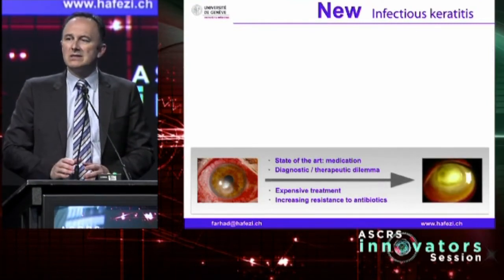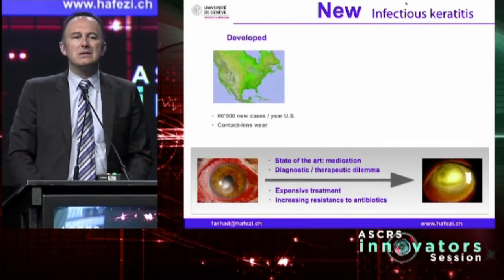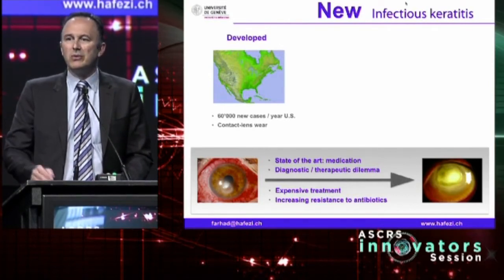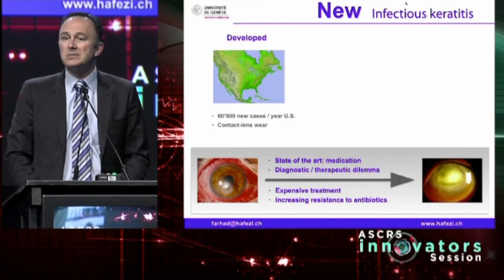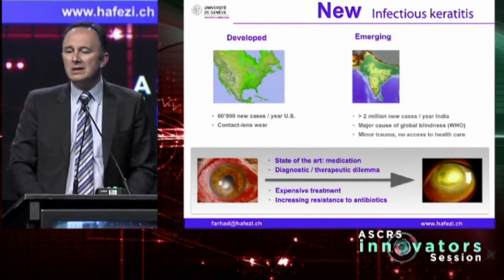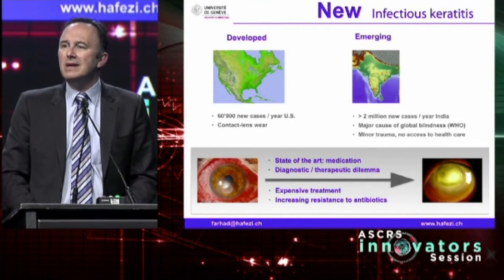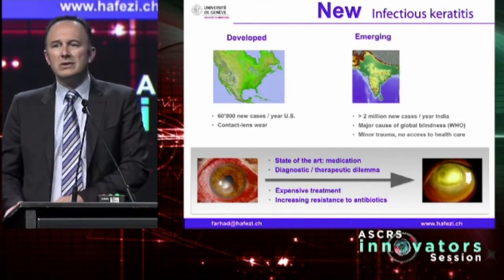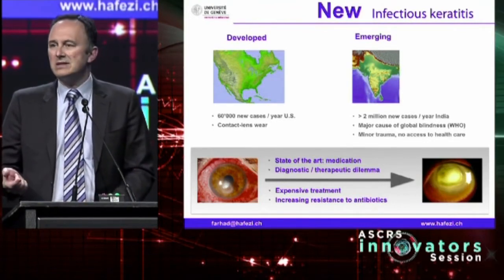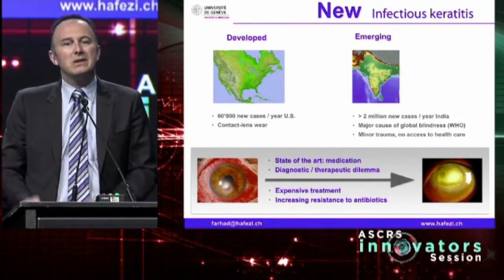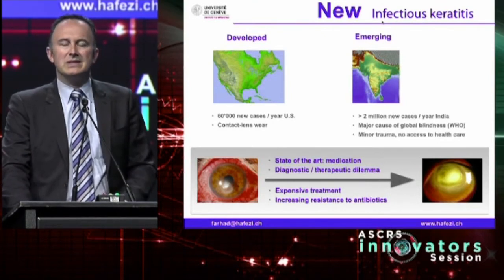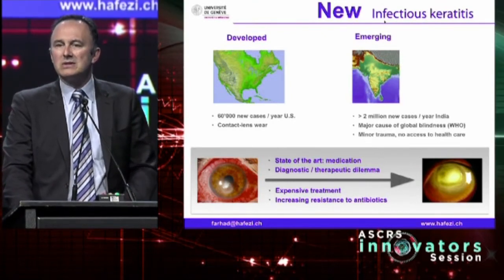Looking at infectious keratitis at a global level — in developed countries it is often related to contact lens wear. In the US, we have a registry that reports roughly 60,000 new cases of corneal ulcers per year. But the real problem is in emerging and developing countries. We have data for India, where we speak about an estimated 2 million cases every year — minor corneal trauma, farm workers, no antibiotics, little income per day, cannot afford the antibiotics, and little to no access to the healthcare system. These people will lose their corneas and their eyes. It is a leading global cause of blindness.